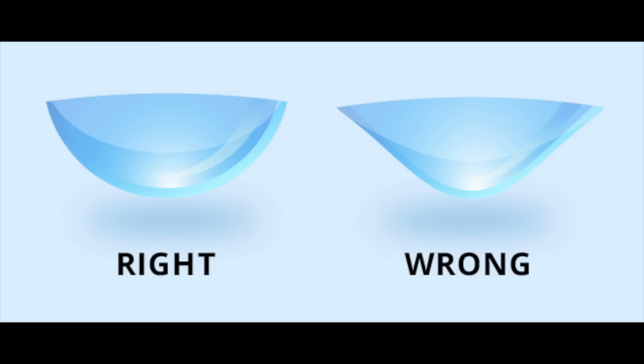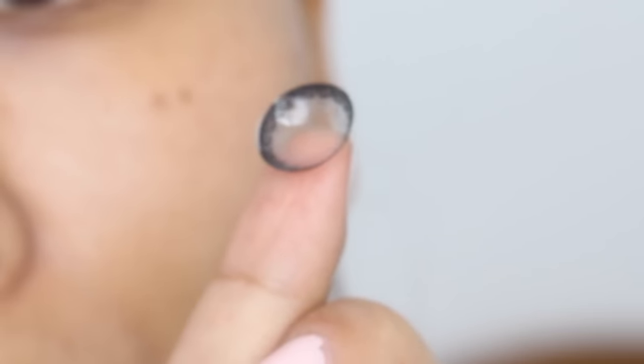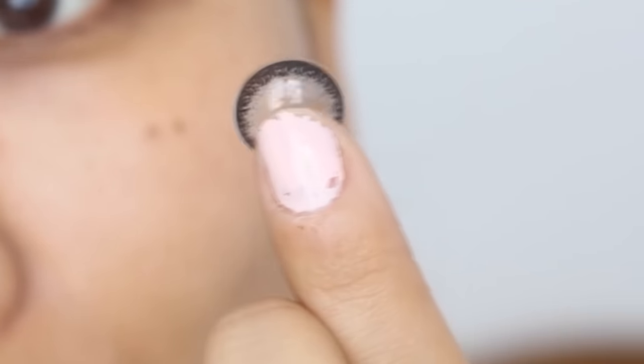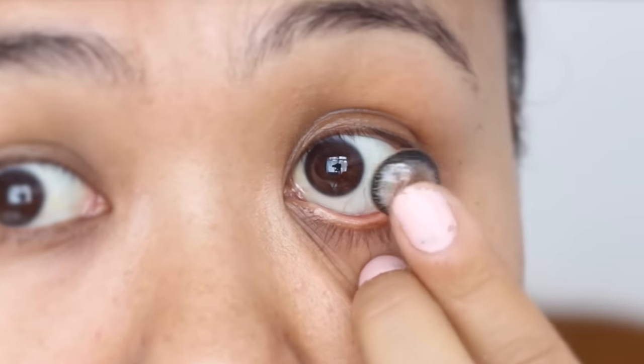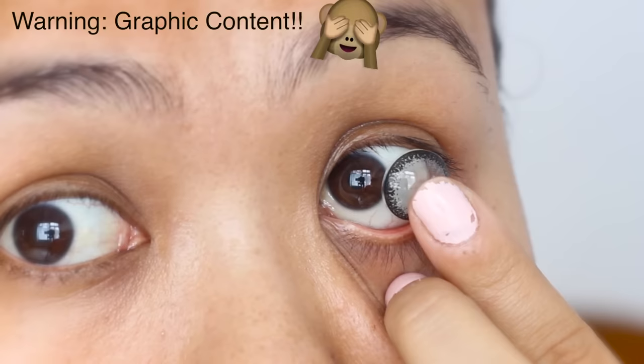And also for colored and circle lenses, the darker color should always be on the outside whereas the lighter color should be on the inside. Then using my middle finger, I just pull my lower lash line like so and always make sure to look away from the lens. You can either look into a mirror but at the moment I'm looking into my camera's viewfinder.